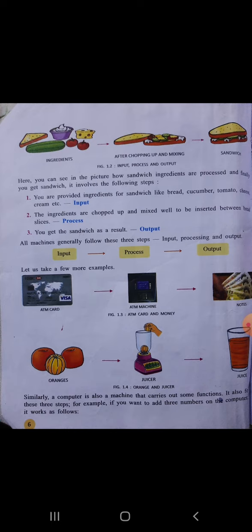The third example is making an orange shake. We provide oranges, so that's our input. The oranges are put into a juicer and worked on, so it's a process. In the form of a result we have orange shake, so it is called output. Similarly, a computer is also a machine that carries out some functions.